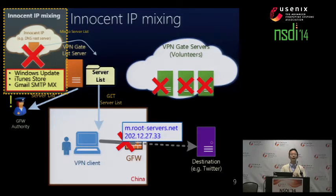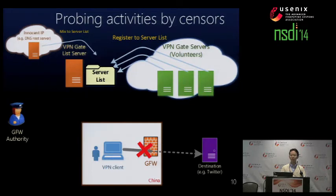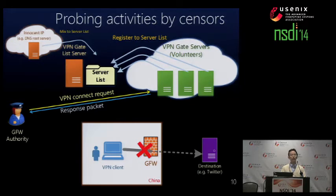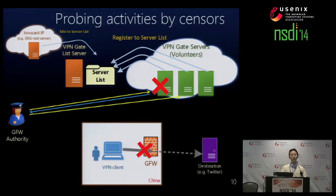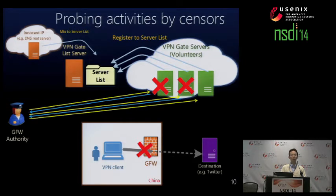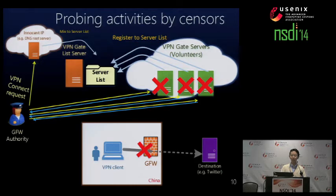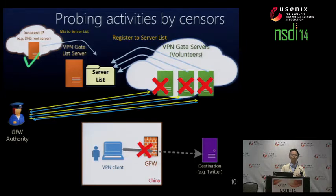However, the authority has another countermeasure to our countermeasure: probing activities. The authority can send actual connection request packets to every candidate IP address. After the response packet from an actual running server is received by the authority, the authority will identify that server as a positive server and block that IP address safely. In contrast, if the authority sends a connection request to an innocent IP address, no response will be received, the authority will notice that this IP address is negative, and will not block it.